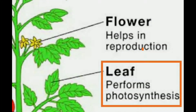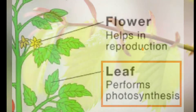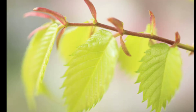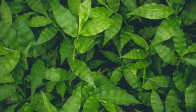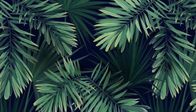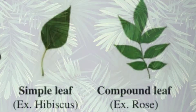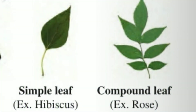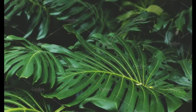The leaf is flat and plays an important role in the production of food. Leaves are mainly of two types: simple and compound leaves.